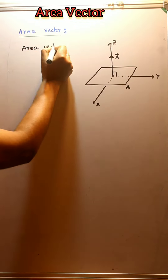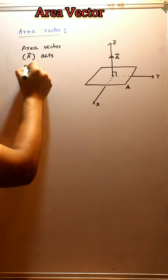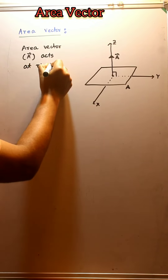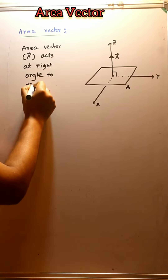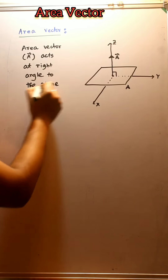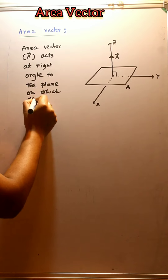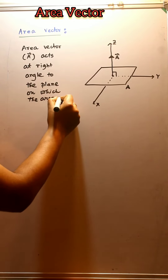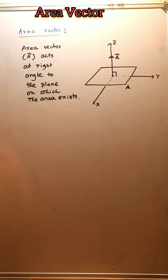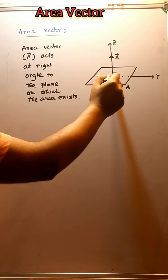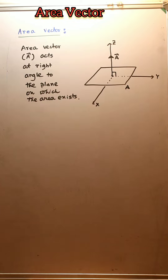So area vector A acts at right angles to the plane on which the area exists. Vector A acts at right angles to both the y-axis and x-axis, and the area vector acts along the z-axis.